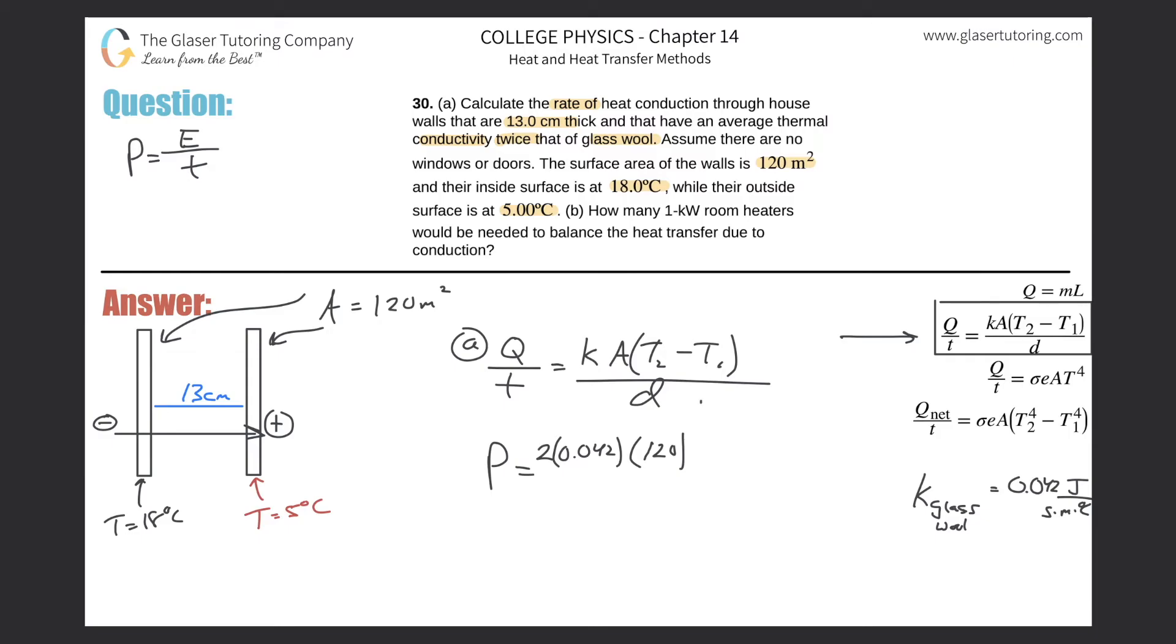You can even just do an absolute value here, and then plug in the values however you like. Or you can always just plug in the bigger one first, and you don't even need an absolute value. Plug in the bigger one first and small one second, and then from there, just think about it at the end. What sign should it be? Depends on what you're talking about. Let's just calculate this this way.